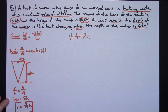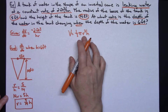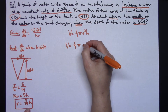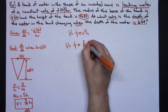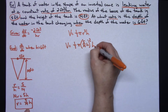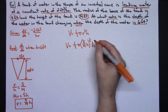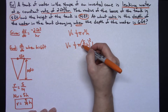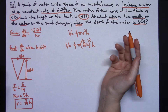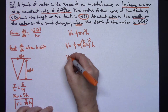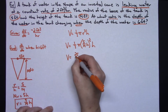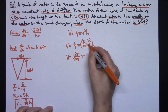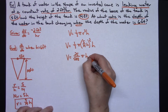Now I substitute r into the volume formula. So V equals one-third pi times (5/14 h) squared times h. Squaring 5/14 and multiplying by one-third gives V equals 25 over 588 times pi times h cubed — because h squared times h gives h to the third. Once you get to that simplified form, the remaining steps are straightforward.